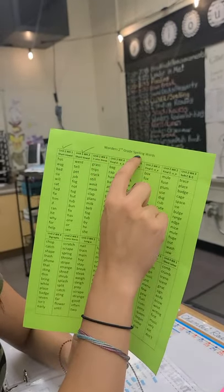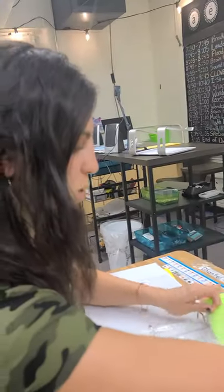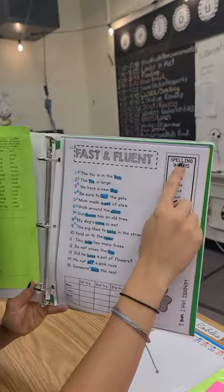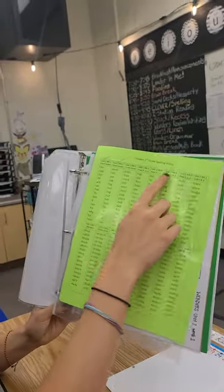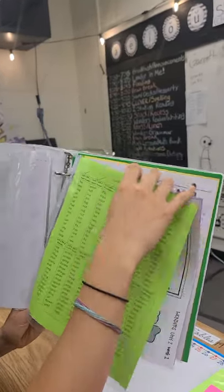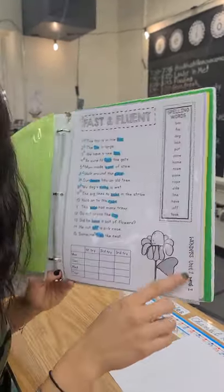Another great way to know which words we're on is the fast and fluent page. So with the fast and fluent page, these are spelling words. They match up the same spelling words as these ones. Unit two, week one. It also will say that right here. Unit two, week one. So when I send you that text, you'll see it. Unit two, week one.